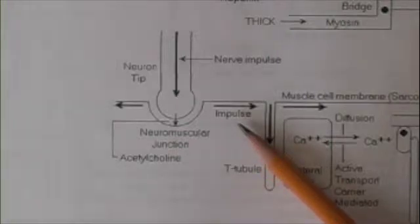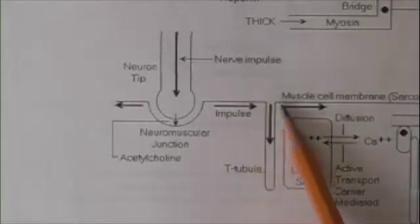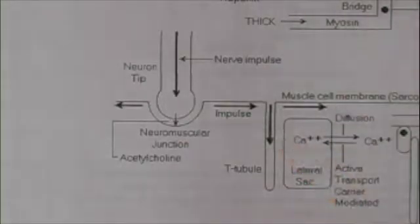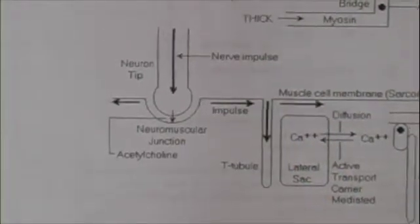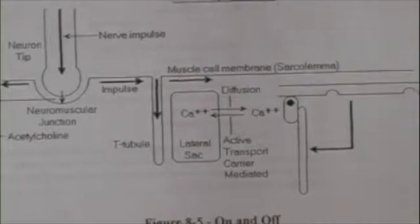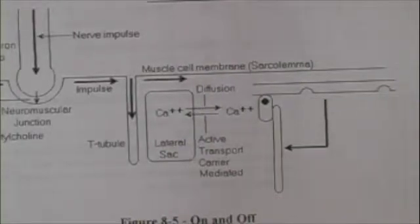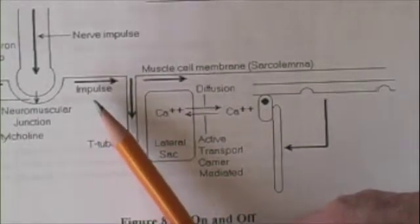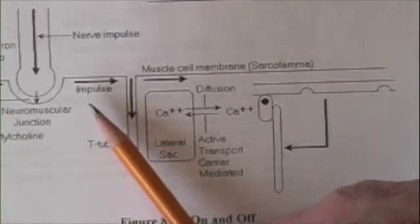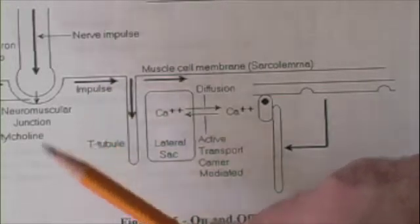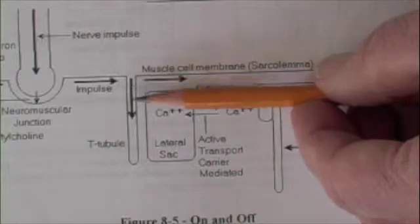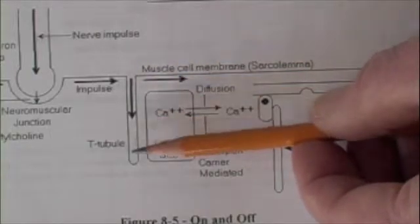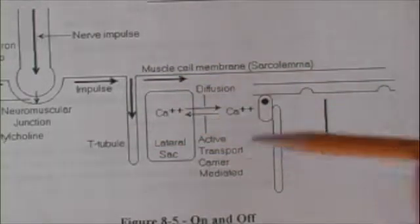This impulse is transmitting information. It travels along the plasma membrane of the muscle cell. But the site of action of this signal is deep within the cell. In order for the impulse to get into the cell, it travels down the T-tubule, and when it does so, it reaches the lateral sac.